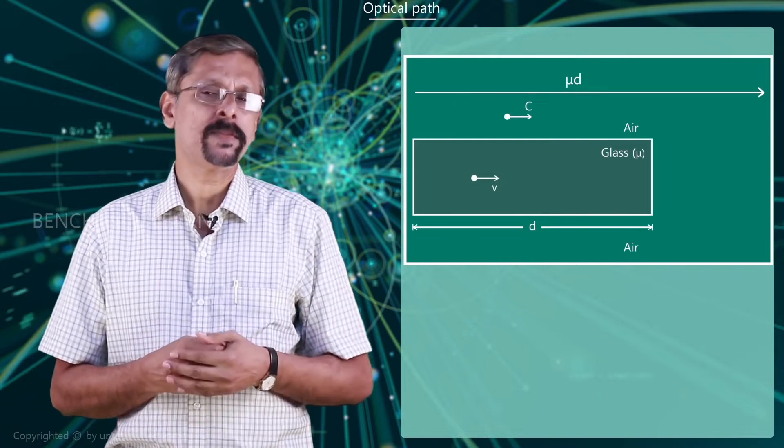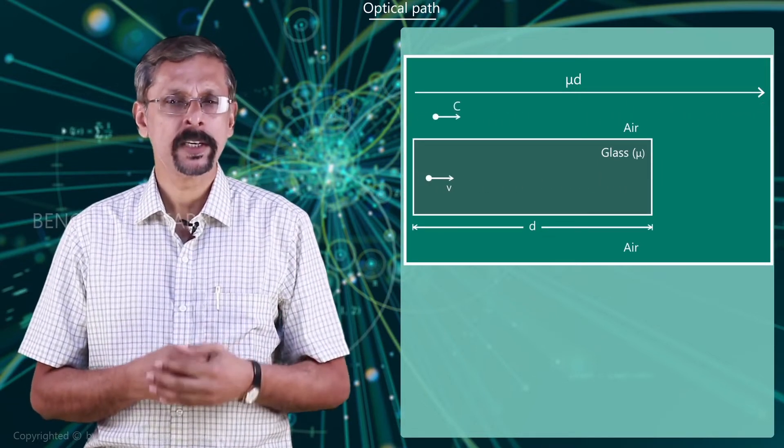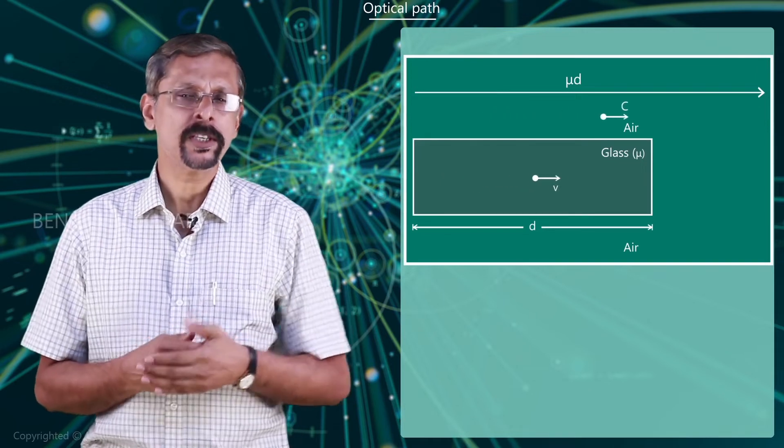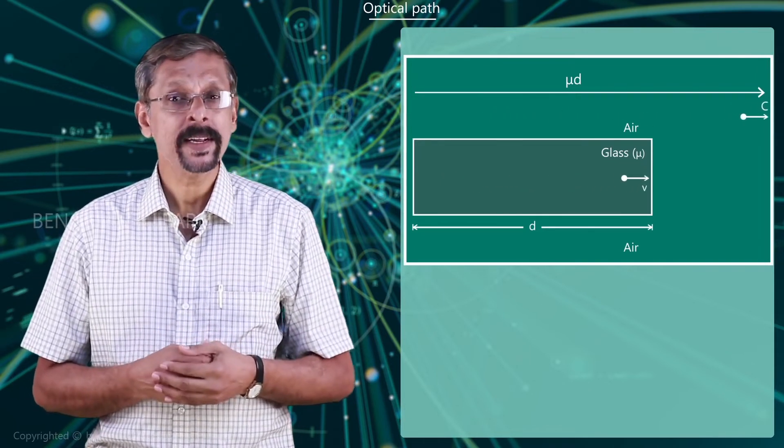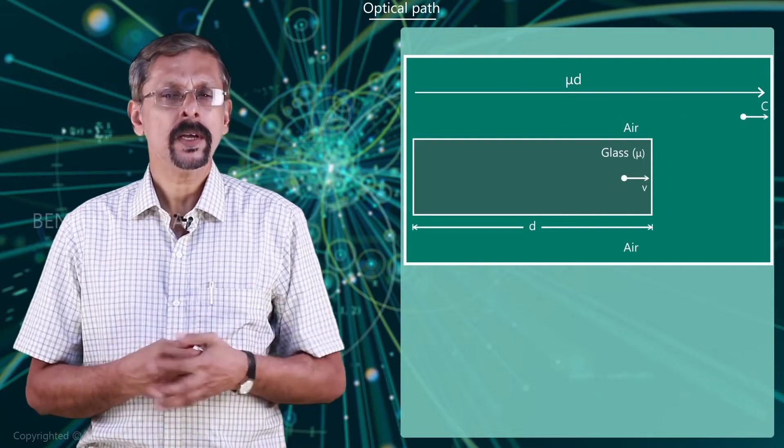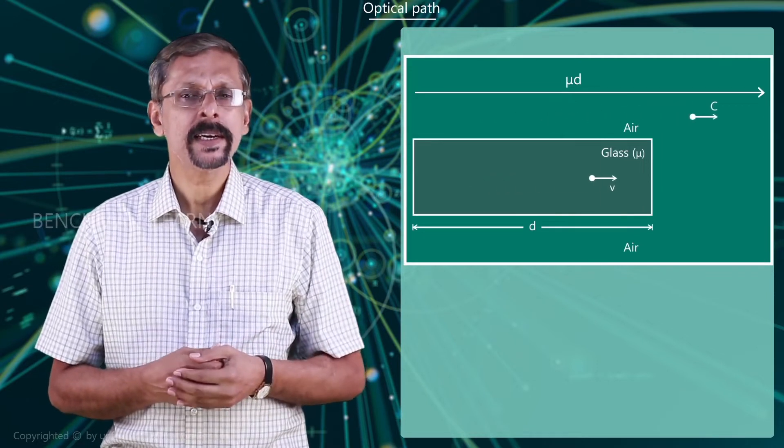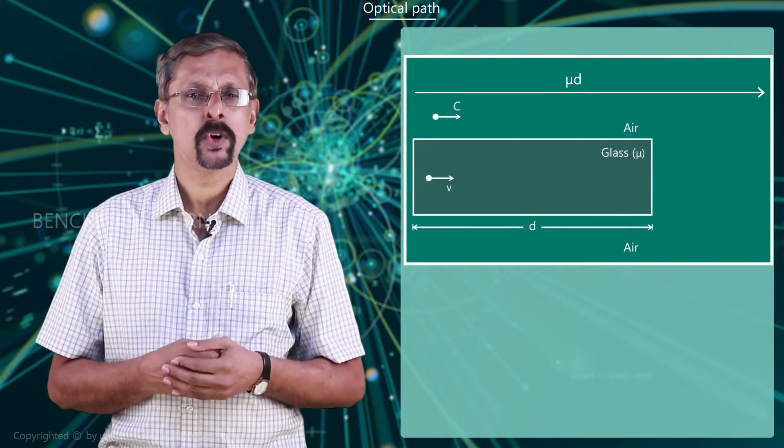Let t be the time taken by the beam to travel a distance d through the material. During this time, the beam travelling in air moves through a distance which is known as the optical path. The equivalent distance travelled by a beam of light in air is what is known as the optical path.